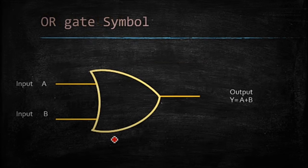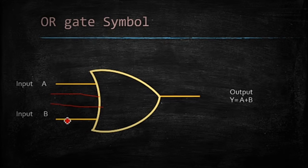This is the symbol of OR gate. If A and B are the inputs, then output is A plus B. In the same fashion, if there are N inputs, then what will be the output? Y equals A plus B plus C up to N. The sum of all the inputs.